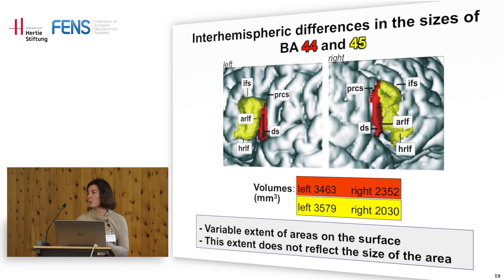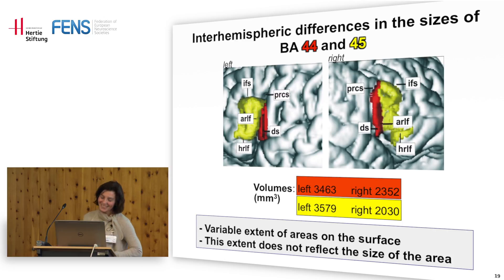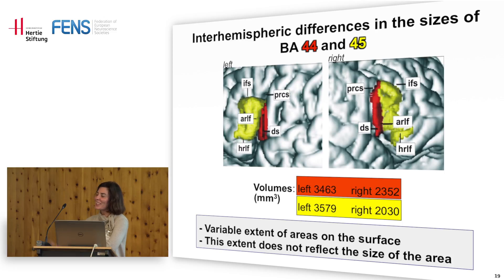You said in Broca's area layer 4 is relatively thin — if layer 4 is the input layer, what is the consequence of the fact that in Broca's area this layer is thinner? Is there a consequence of the relatively small volume of that particular layer compared to other layers? — I'd rather wait with that question because it's something I wanted to address later in the talk.